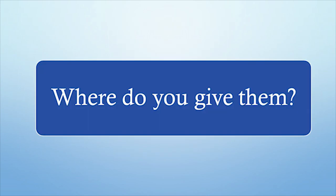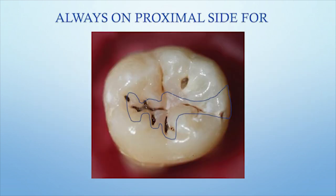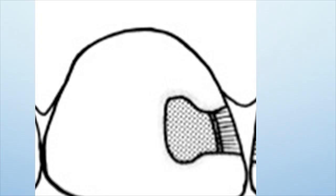Where do you give the occlusal dovetail? I have seen students getting confused, sometimes giving it on the buccal or lingual side, especially on maxillary molars. The dovetail is always given on the proximal side of molars and premolars — that is, the mesial and distal side. So if you are doing a Class 2 MO, the dovetail can either come into the central pit if it is a conservative cavity, or you can give it into the distal marginal ridge area. You can also give dovetails in anterior teeth — for example, if you are doing a Class 3 restoration, you can make a small dovetail on the lingual side so that retention improves for the whole restoration.